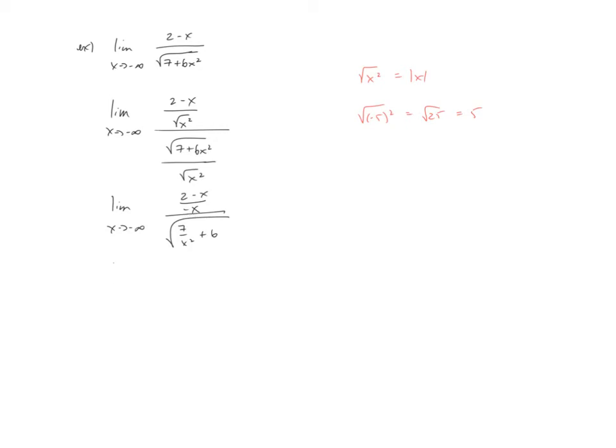Now when I do this, that's going to be a negative 2 over x plus 1, all over the same square root 7 over x squared plus 6. This would go off to 0, this would go off to 0, and my final answer now would be my 1 over root 6.